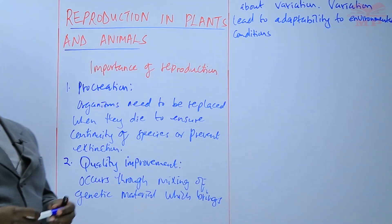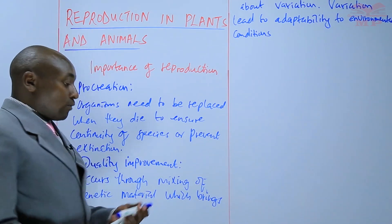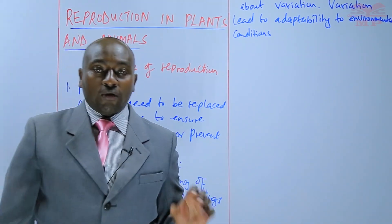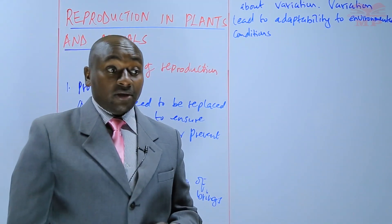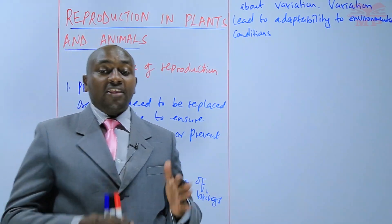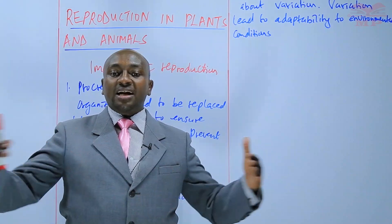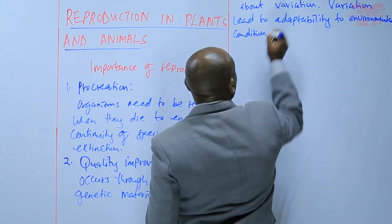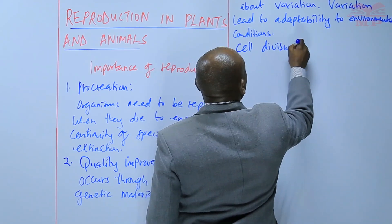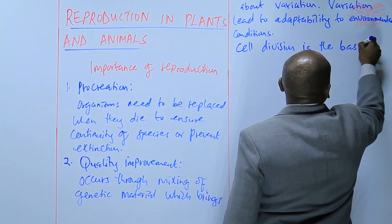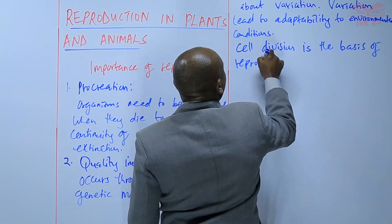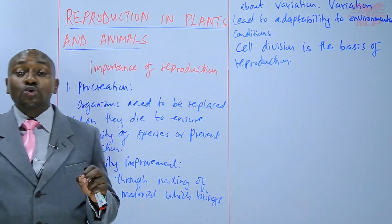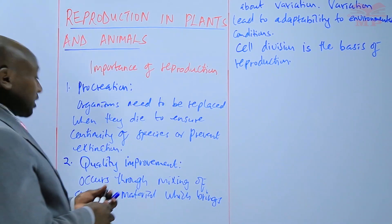Those are the two importances of reproduction. Now, from here, we want to understand that the basis or the foundation of reproduction lies in cell division. For organisms to reproduce, their cells must be able to divide and therefore increase in number. Cell division is the basis of reproduction, and therefore we cannot understand reproduction if we do not understand cell division. So, we are going to look at cell division.